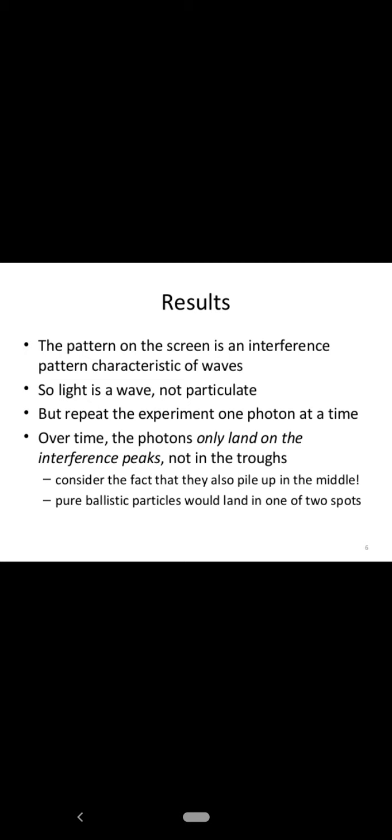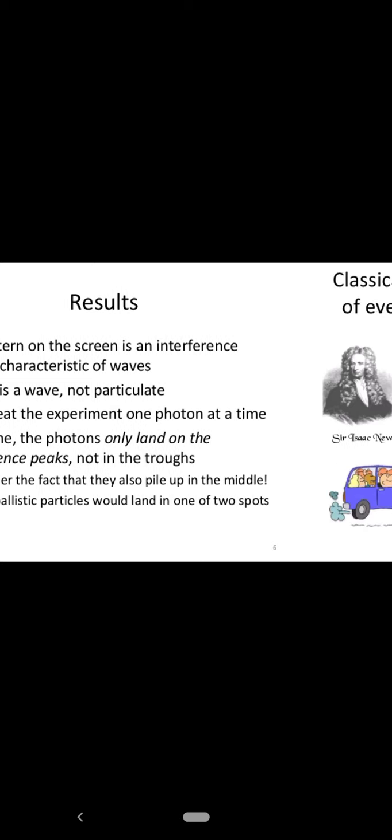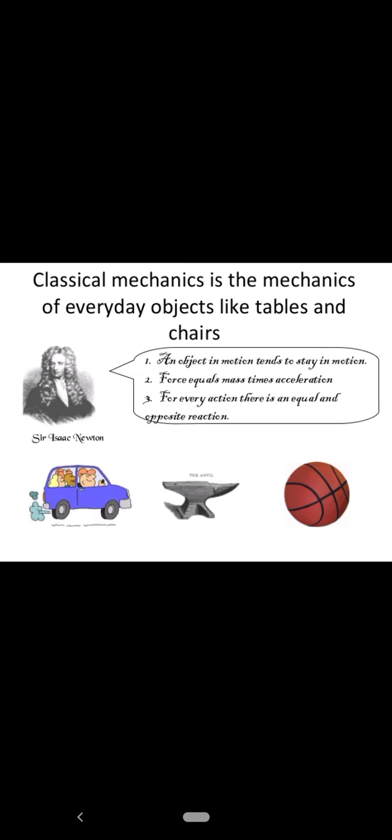Over time the photons only land on interference peaks, not in the troughs. So let's discuss classical mechanics, then we will see how the transition from classical mechanics to quantum mechanics took place.